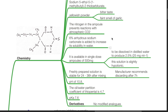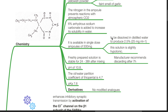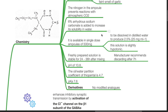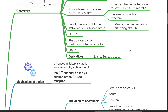6% anhydrous sodium carbonate is added to increase its solubility in water. It is available in single-dose ampoules of 500mg to be dissolved in distilled water to produce 2.5%. This solution is slightly hypotonic. Freshly prepared solution is stable for 24 to 36 hours after mixing, though the manufacturer recommends discarding it after 7 hours. It has a pH of 10.8.